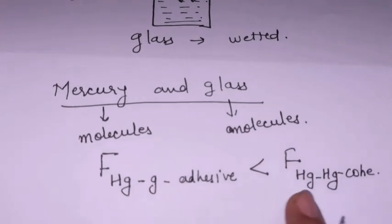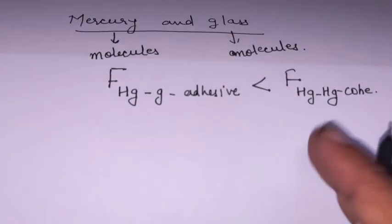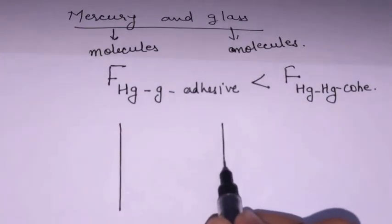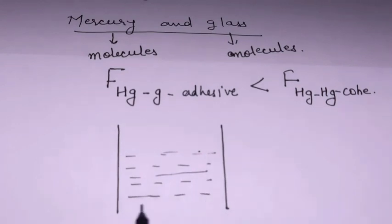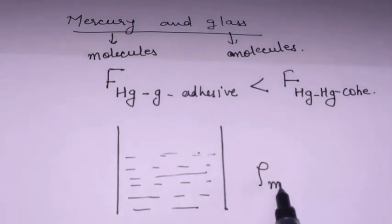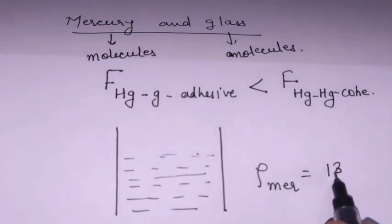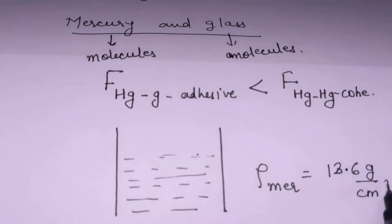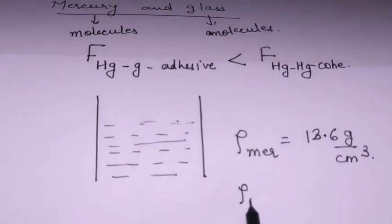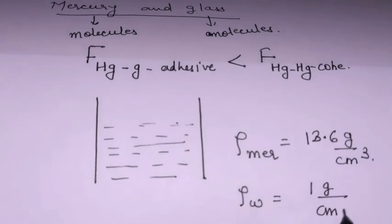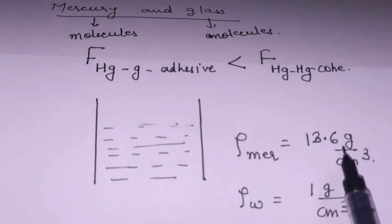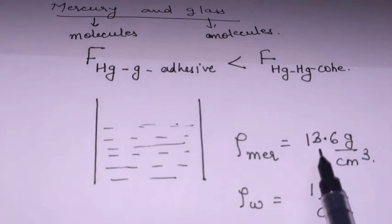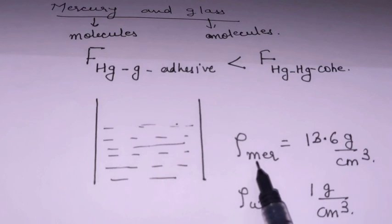Hence, mercury molecules cling to each other. Taking a glass tube in which we have filled mercury — this is the temporary shape. The density of mercury is 13.6 grams per centimeter cube, whereas the density of water is 1 gram per centimeter cube. So the specific gravity of mercury is 13.6 because it is 13.6 times more dense than water.